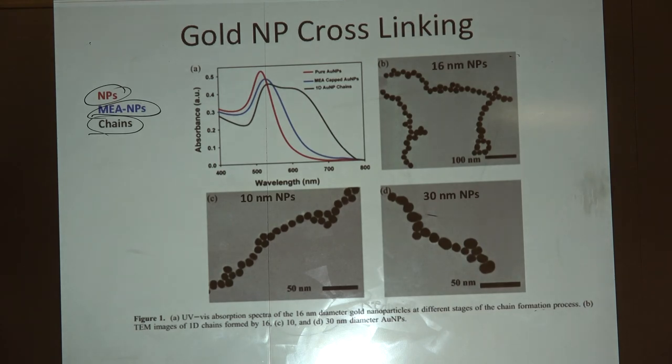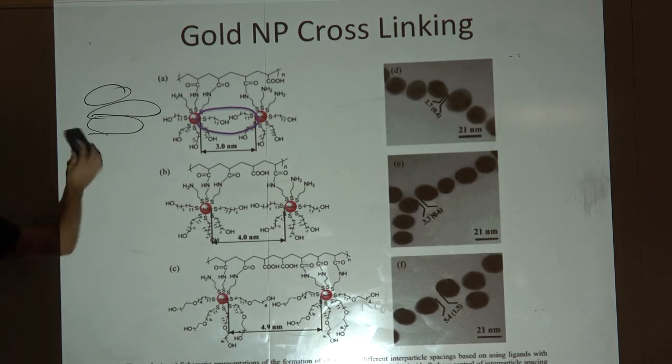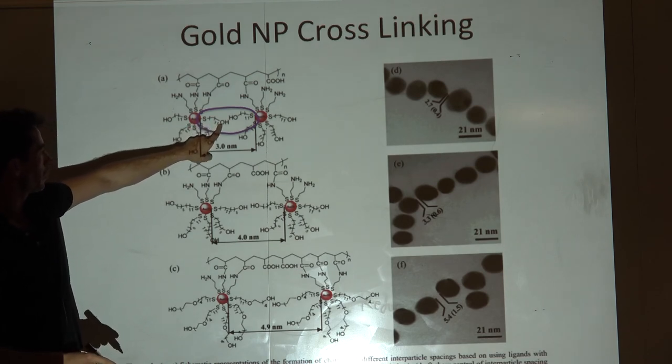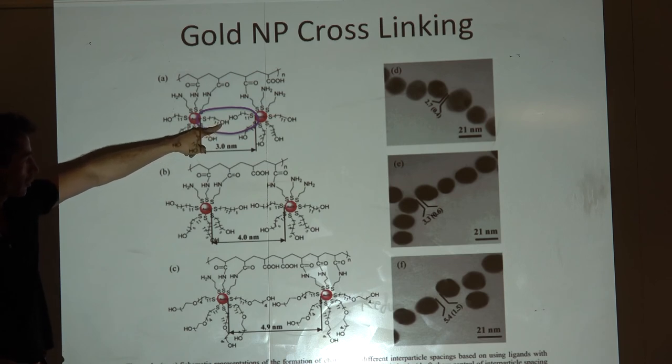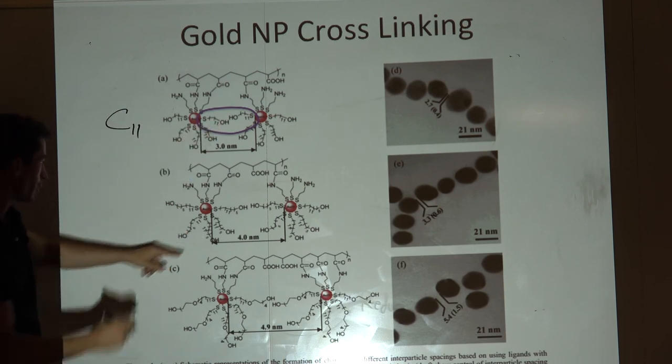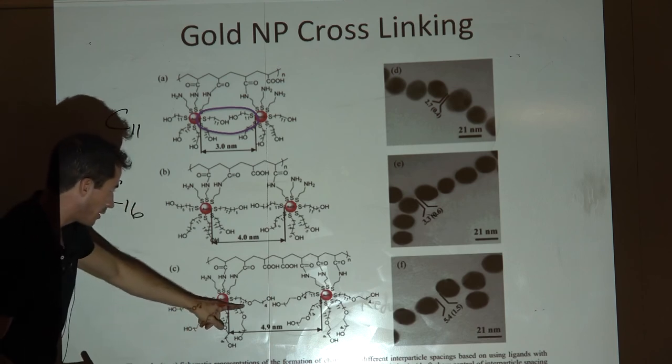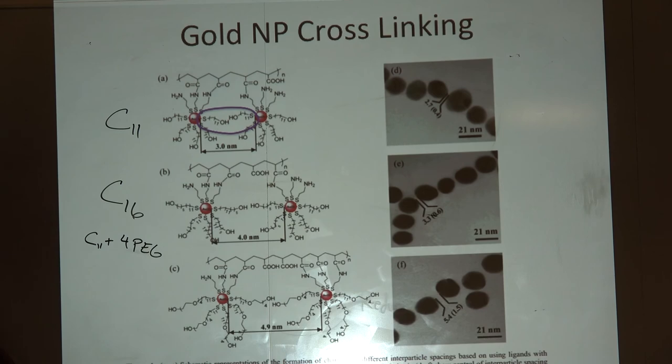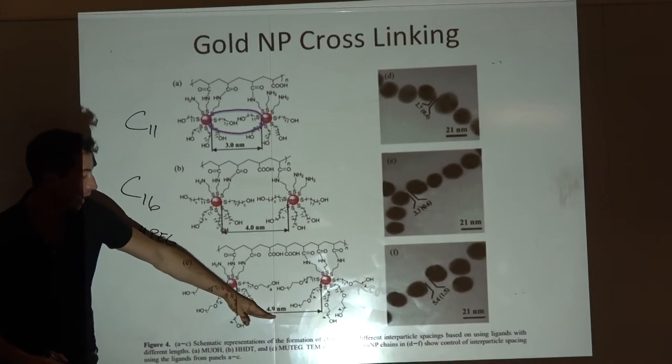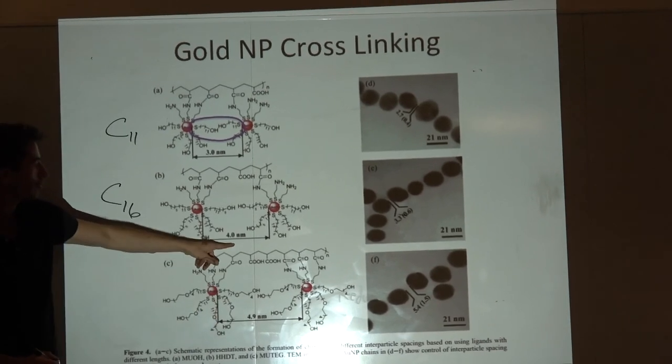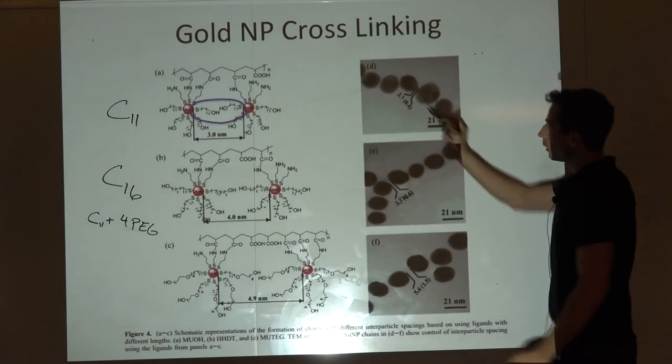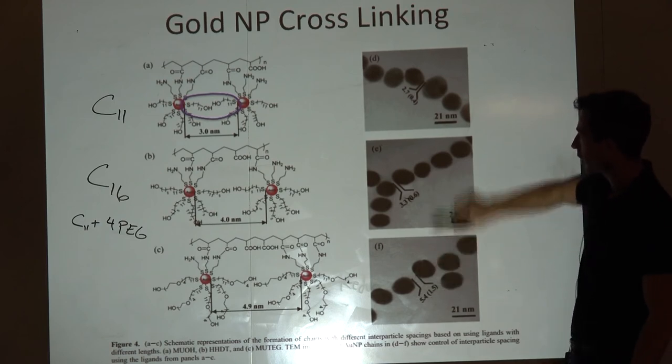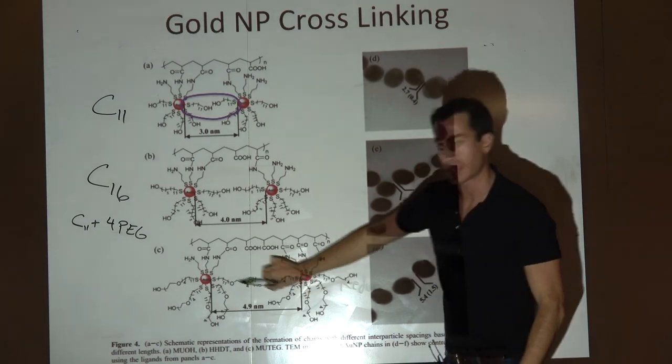Then they looked closer at electron microscopy. They could tune this spacer, the non-reactive hydroxyl group. Here it was C11. In this situation, C16. Down here, C11 plus 4 PEG repeats. The distance they calculated was 4.9 nanometers, 4 nanometers, and 3 nanometers. They look at high-resolution TEM and show more spacing between particles down here than up here when you increase the spacing. That is nanoengineering.